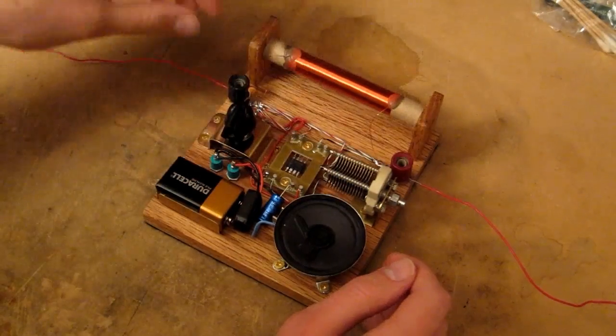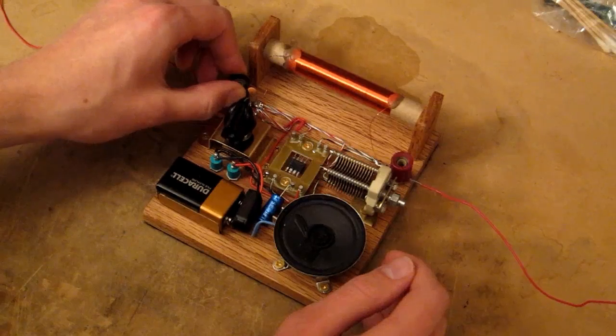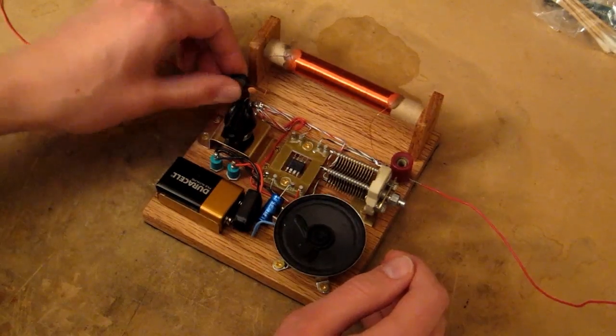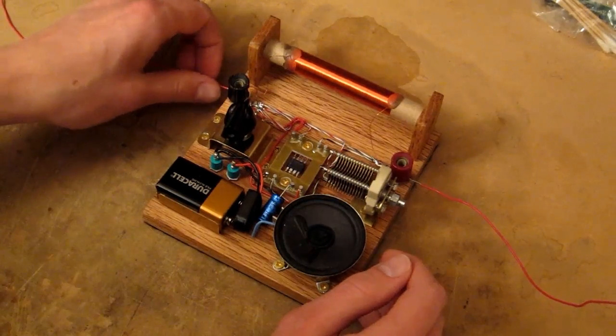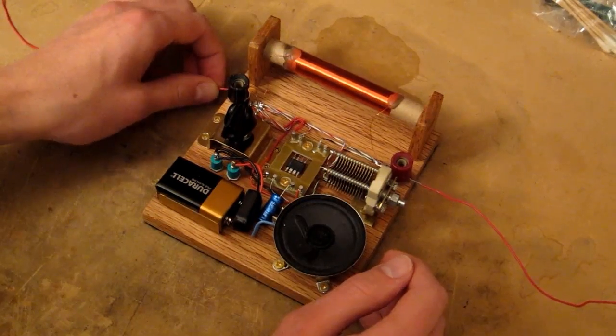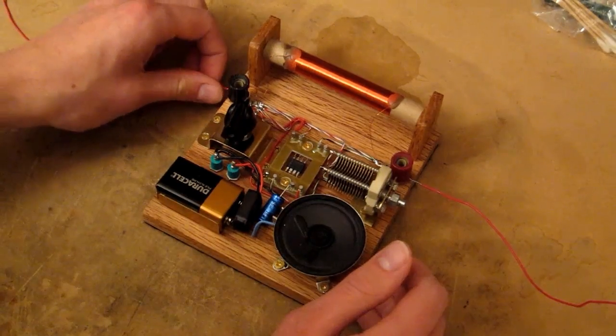Over here we have the antenna connection, and over here we have the ground connection. This is a very old-style radio, at least on the RF front end, and so it's going to need a really good solid ground. So I've connected this to the third prong on an AC outlet because that's connected to earth ground.